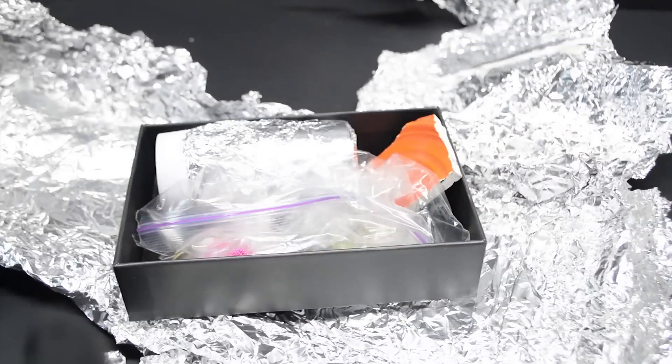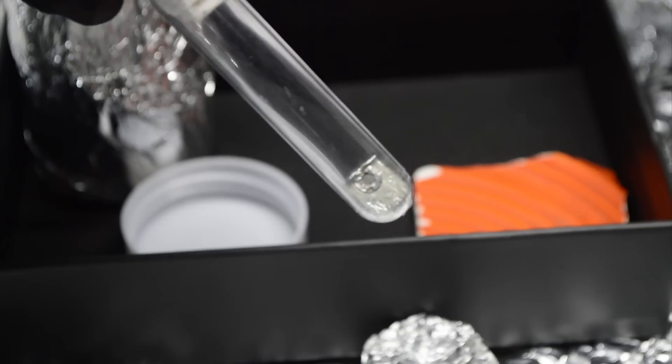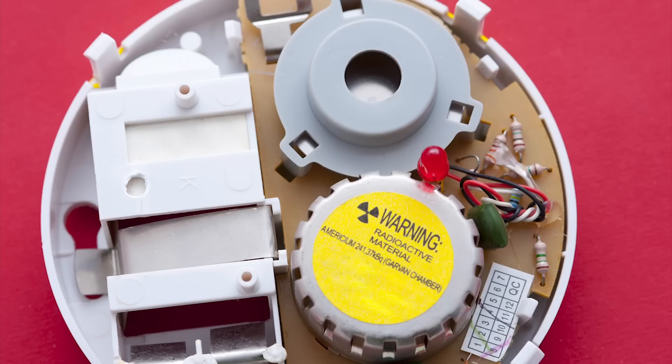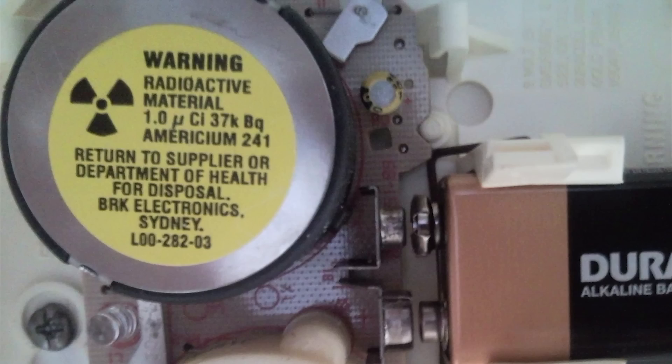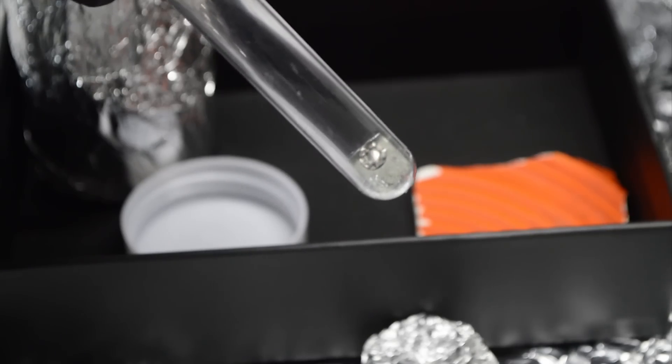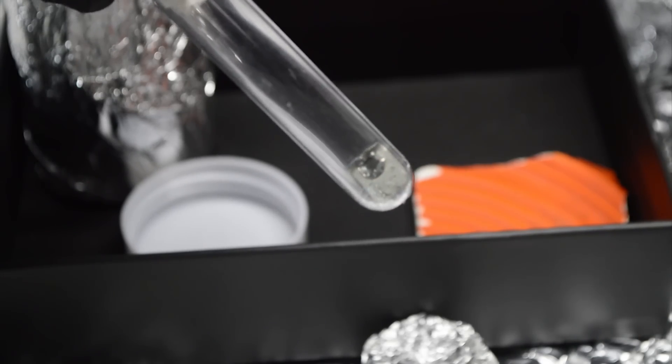But to really see this in action helps to put something a bit radioactive into the chamber. Let's start with a piece of americium which I extracted from a smoke detector. For those unaware, smoke detectors use a small piece of radioactive material that constantly spray particles at a detector. If something like smoke enters the device, it stops particles from making it to the detector, which tells the device that there must be smoke and triggers the alarm.